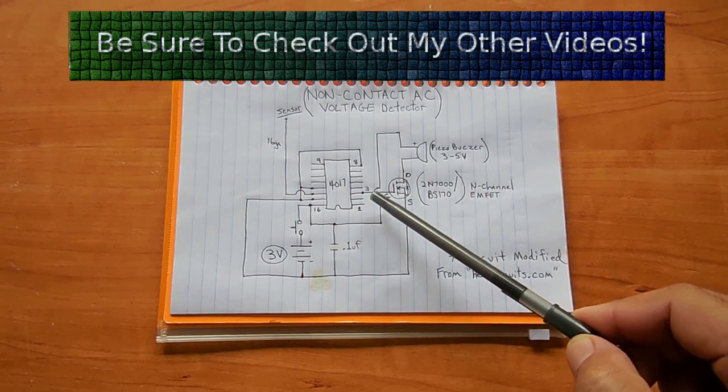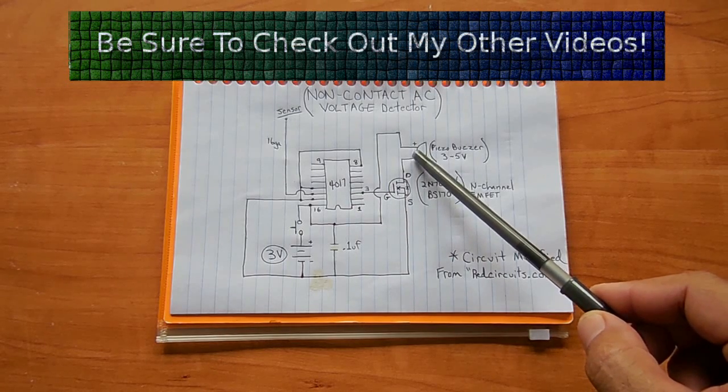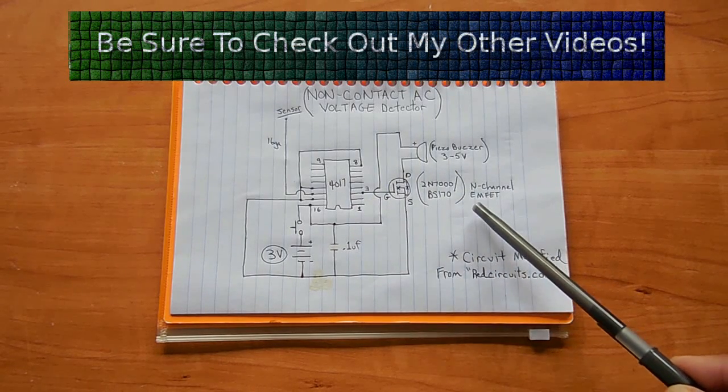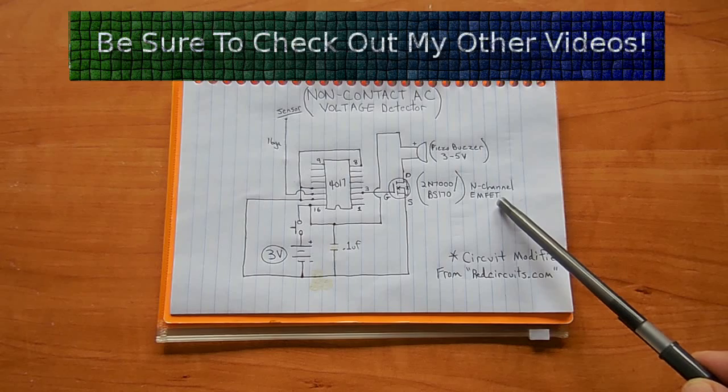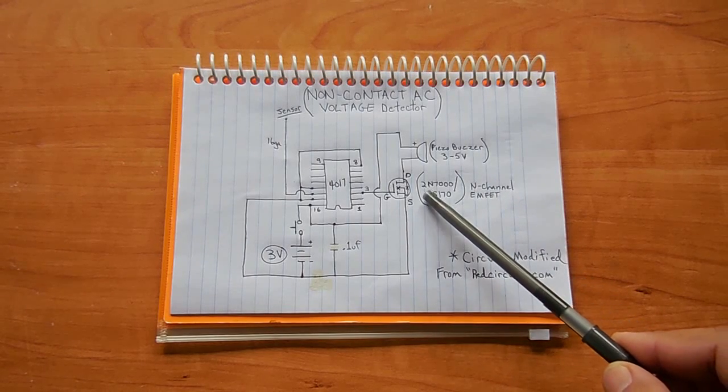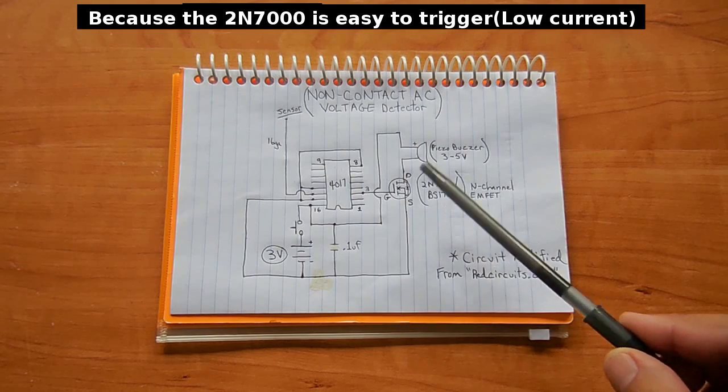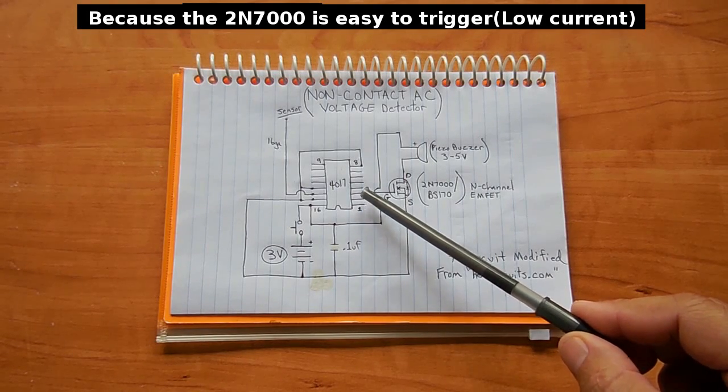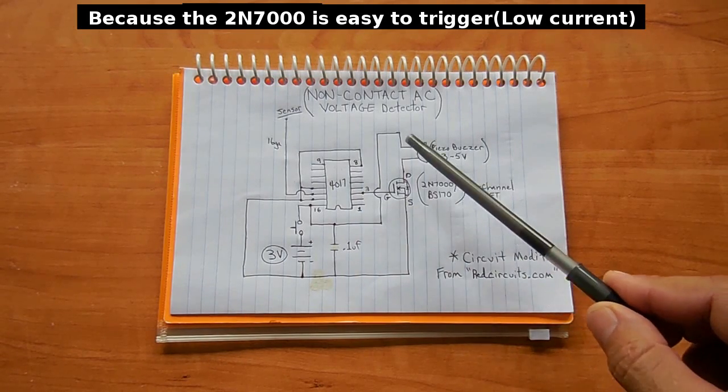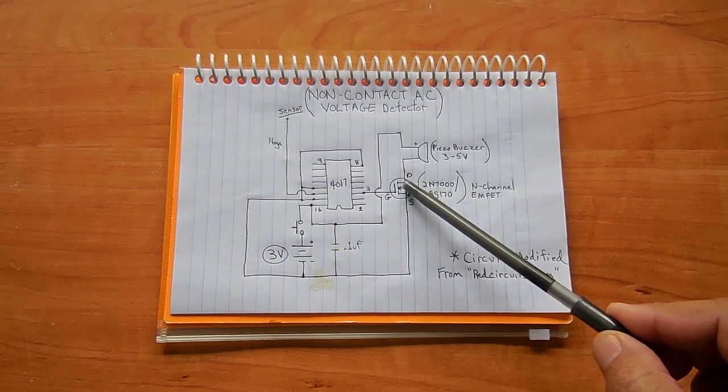So what I did is I took an enhancement mode field effect transistor—it's an N-channel, a 2N7000 or a BS170 will work just fine—and I use the output from pin 3 to trigger the gate, which in turn turns on the piezo buzzer when AC voltage is being detected.